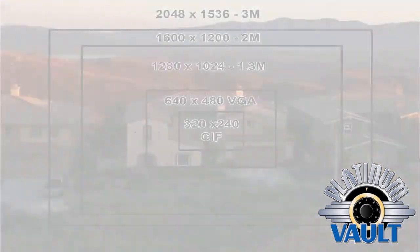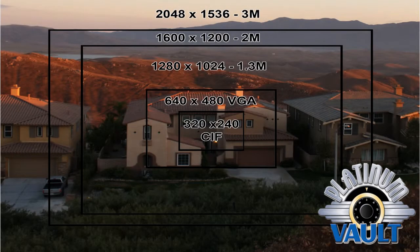Here is a chart of megapixels. Labeled are the actual sizes of standard and high definition images. For this demonstration we filmed the standard definition at 640x480. By using this chart you can compare the quality of low and high definition in real time.